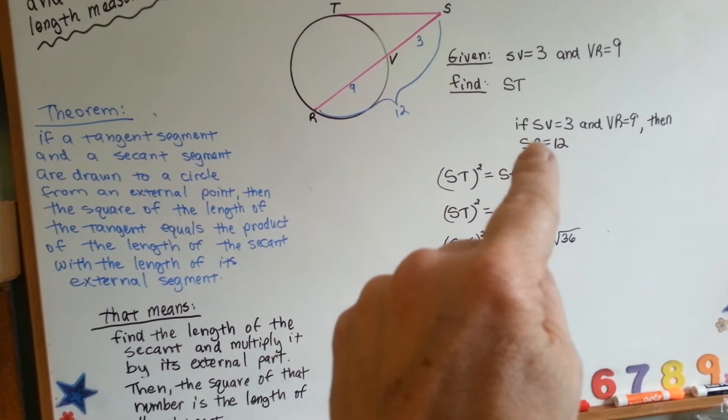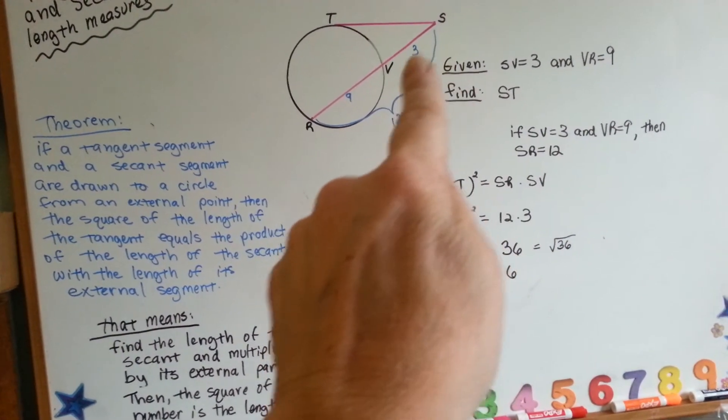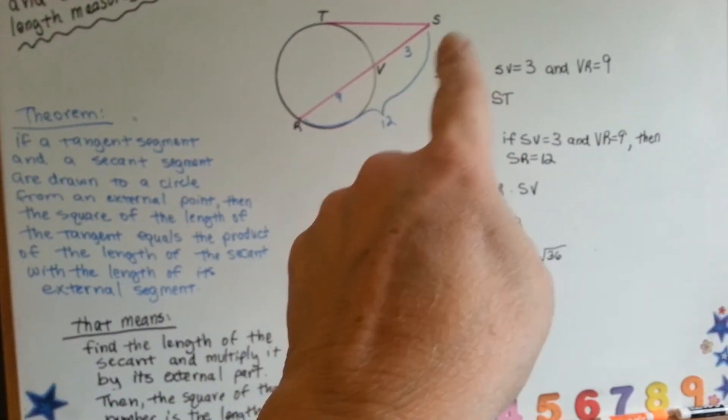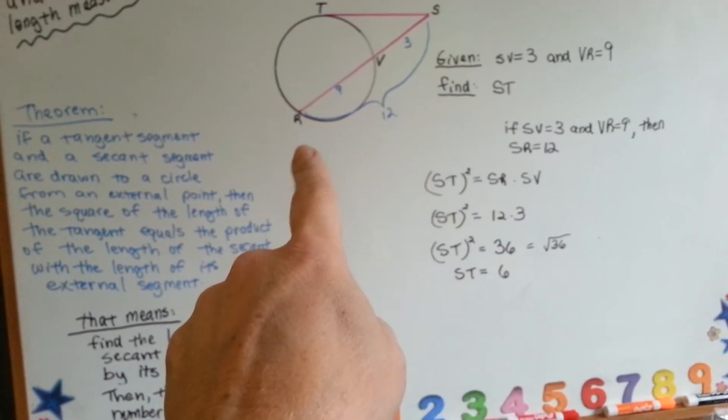So, if sv is 3, this little part here, and vr is 9, then sr is 12. The whole thing is 12.